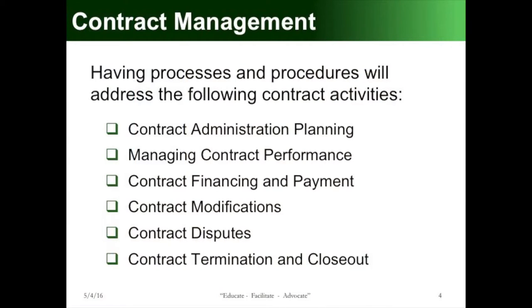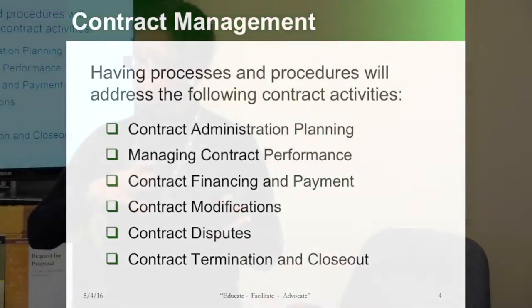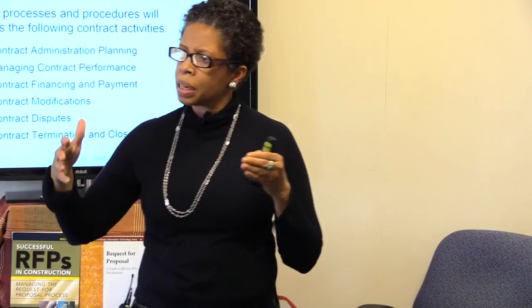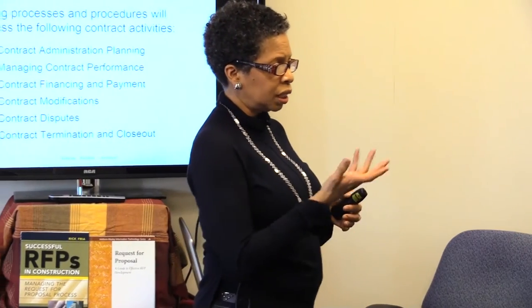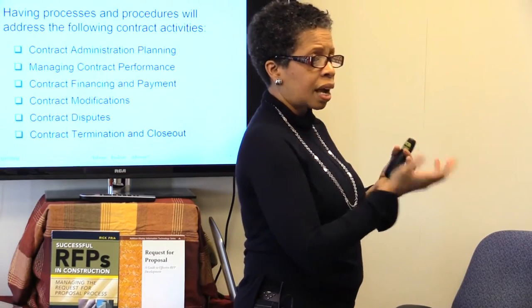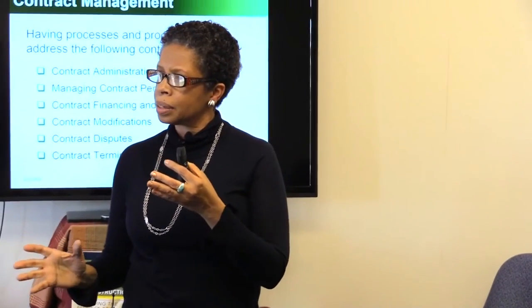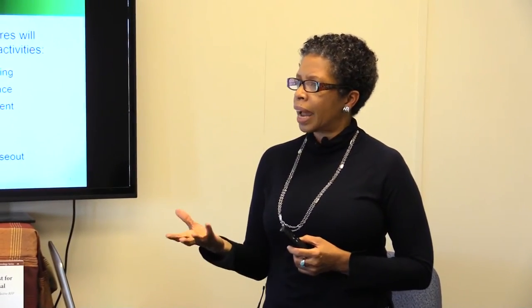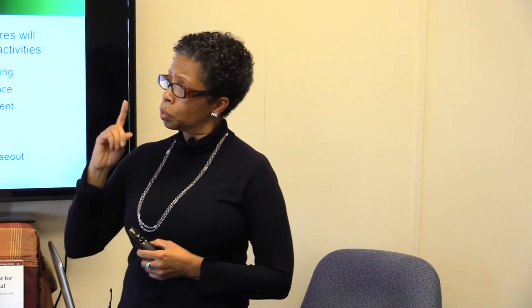Contract termination and closeout: at the end of a contract, particularly if you're the prime, what are the things you need to do to close it out — or if it's being transferred to another contract? Every contract, whether you're a small or large company, you should have a process in place. It helps you reconcile if there are missing things you haven't finalized. If you set up a joint venture account, do you still need it or do you close it out?